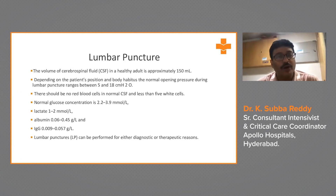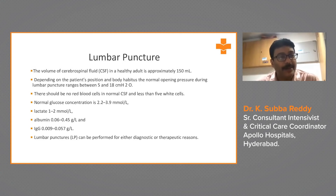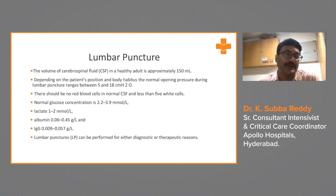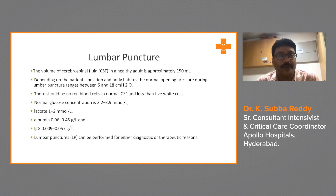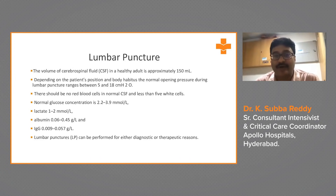The volume of CSF in a healthy patient is about 150 ml. Depending on the patient's position and body habitus, the normal opening pressure during lumbar puncture ranges between 5 to 18 centimeters of water. There should be no red blood cells in normal CSF, and no more than 5 white cells are seen in normal CSF.